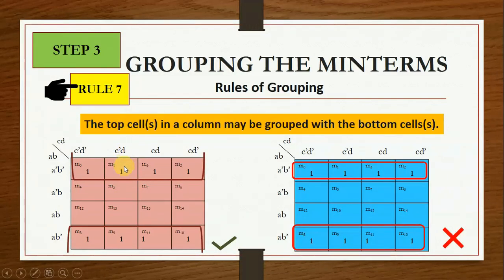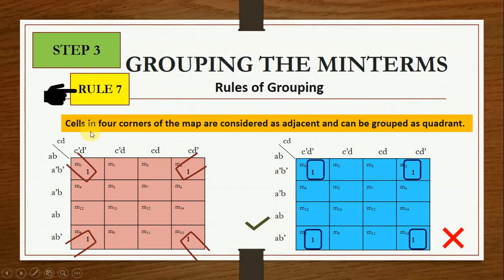Similarly, if ones appear in all top cells and all bottom cells of a 4-variable KMAP, instead of making quads we must make an octet by wrapping — that is the correct grouping. Also, cells in all four corners of the map are considered adjacent and can be grouped as a quad rather than grouping them separately.